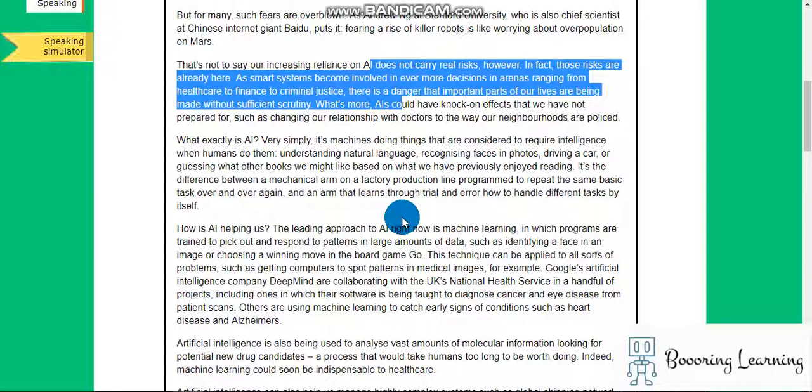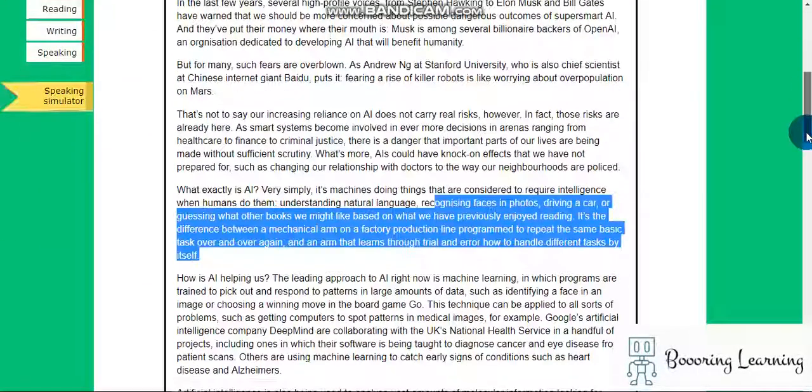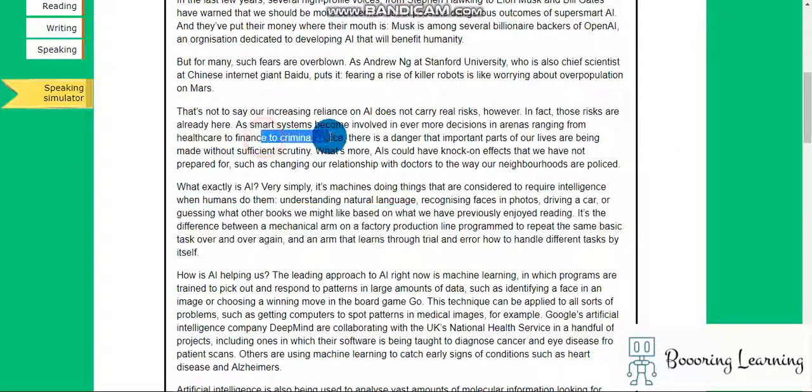That's nice to say our increasing reliance on artificial intelligence doesn't carry a risk. As smart systems become involved, could have knock-on effects that we'd have not prepared for, such as changing our relationship with doctors to the way. Okay, healthcare, finance, to criminal justice.